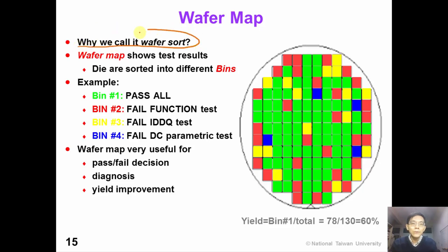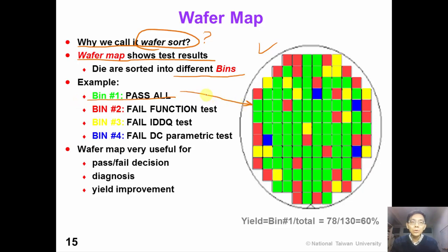So why do we call it wafer sort? This is because after the wafer sort, we sort the dies into different bins according to the test result. This figure shows an example of a wafer map. On this wafer map, each color represents a test result. For example, the green square represents a die belonging to bin number one — this die passed all the tests. A red color represents bin number two, which means this die failed functional test, so we cannot sell it to our customer.